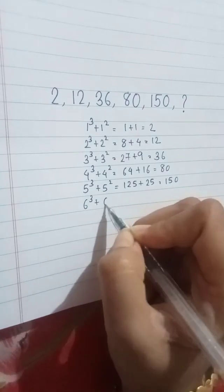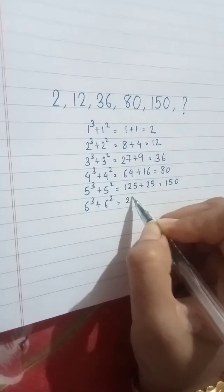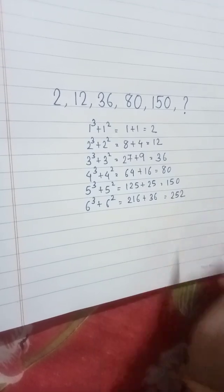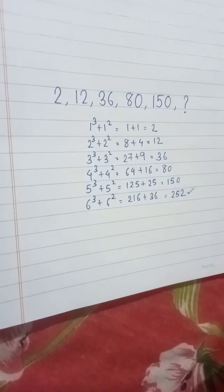Next, 6 cube plus 6 square. We get 216 plus 36 that is 252. Here is the answer.